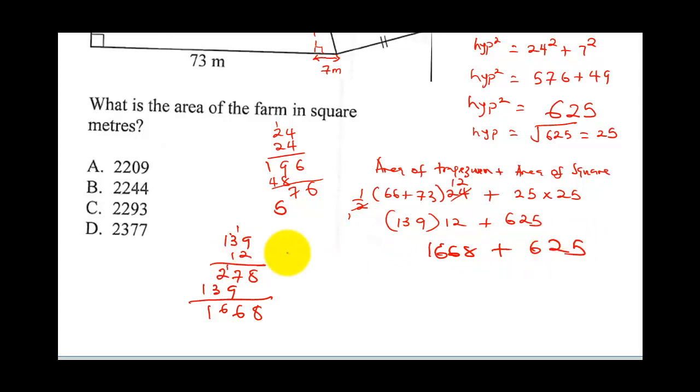So when you sum up 1668 plus 625, you're going to get 8 plus 5 is 13. Carry 1. This will be 6 plus 2 is 8, plus 1 is 9. 6 plus 6 is 12. You write 2, you carry 1, and you get 2. So this means our final answer is going to be 2293. And our unit is going to be meter squared. So the correct answer here is C. And I'll circle my C. Thank you.